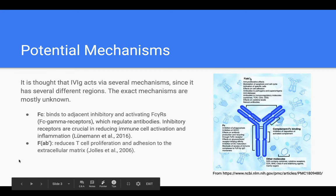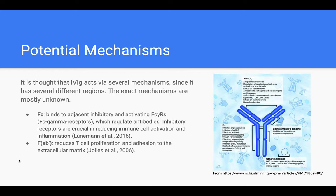Regarding the potential mechanisms of IVIG, it is thought that there are several, since there are several different parts to the immunoglobulin compound. However, the exact mechanisms of how these compartments interact with each other and with other molecules at the same time is not really known because it is just so complex. I'll be talking about what individual parts of IVIG research has shown to do, but overall IVIG is really good at reducing harmful autoimmune responses.